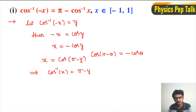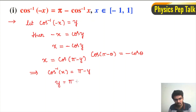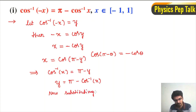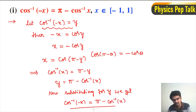Operating cos⁻¹ on both sides, we get cos⁻¹(x) = π - θ. Now substituting y for θ, we get cos⁻¹(-x) = π - cos⁻¹(x). This is the required result.